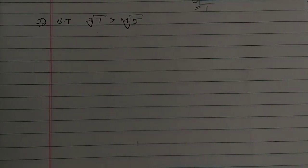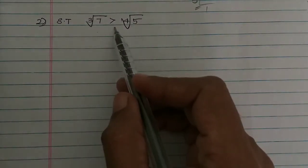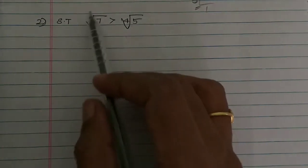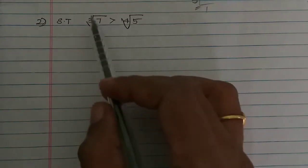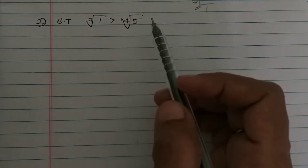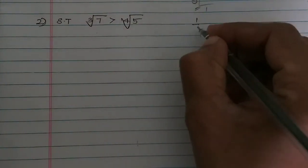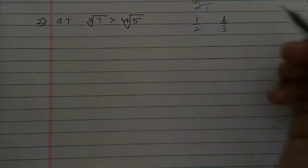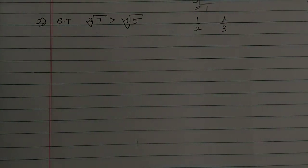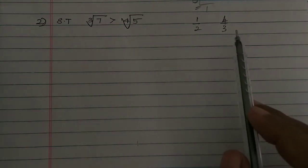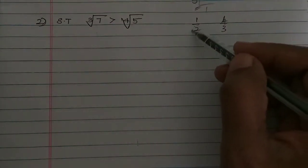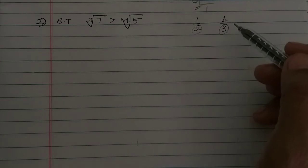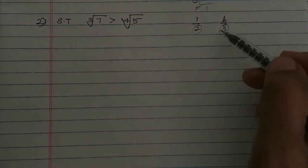So this is the second sum. Third problem: cube root of 7 is greater than 4th root of 5 — you can prove it. Show that. So this is the cube root of 7 and the 4th root of 5. To compare two surds, the denominators must be made equal. The denominators here are 2 and 3 — wait, they are 1/3 and 1/4 as exponents. LCM of 2 and 3 is 6. If the denominators are equal, we can determine which is greater.